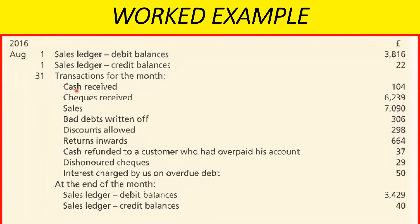Here is a worked example. Notice the sales ledger credit balances — this is obtained from the sales ledger. Some debtors who overpay their account will wind up with a credit balance. When you add all these together you get a total amount, and it must be shown in the sales ledger at the beginning and at the end of the month. The other items are what we have just covered.